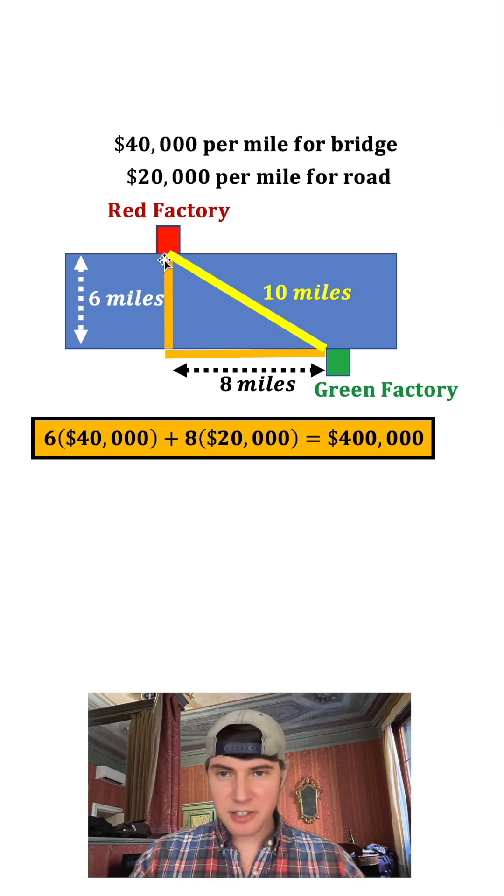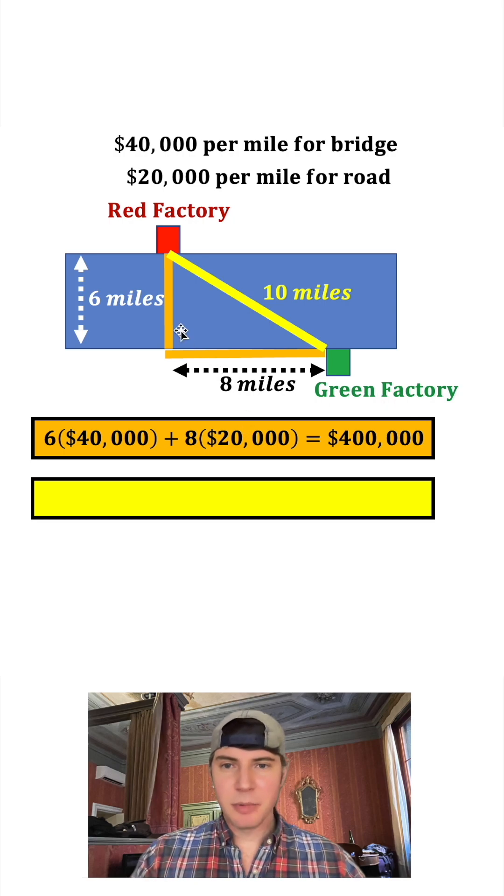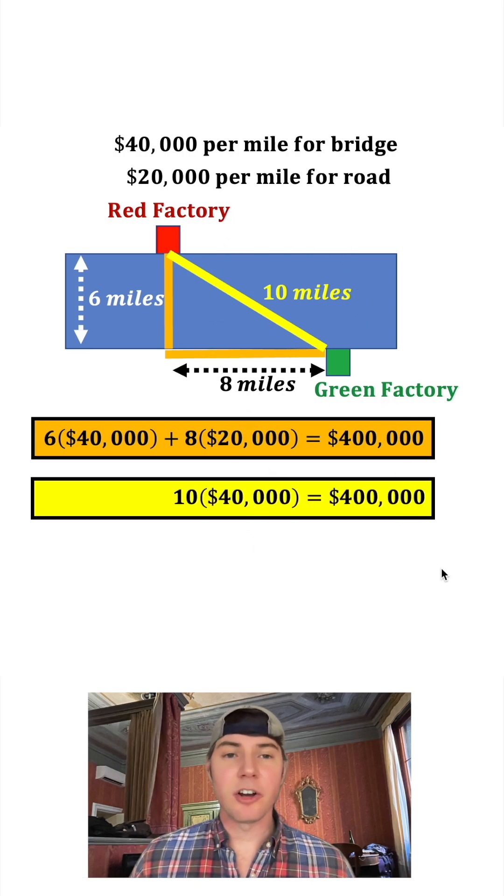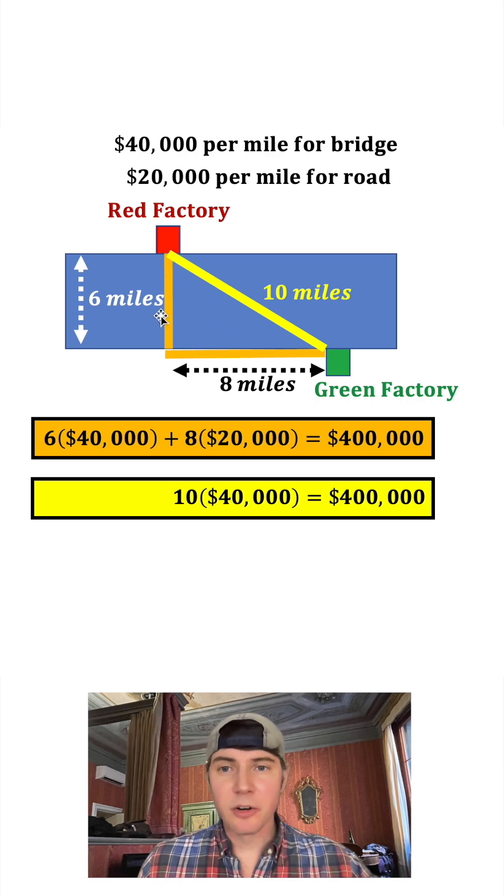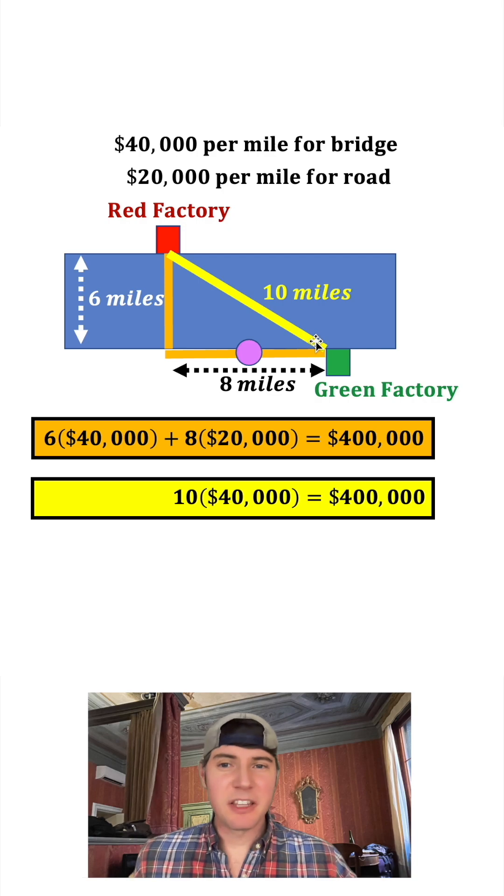Let's see how much this route will cost. It's going to be 10 miles times $40,000 for a bridge, which is also $400,000. Either the orange route or the yellow route will both cost me $400,000. Let's try something in the middle.